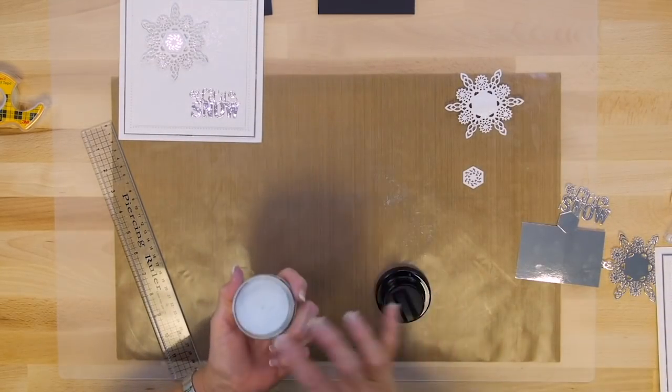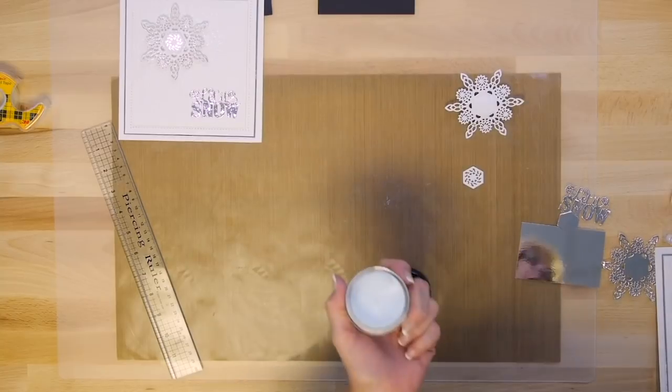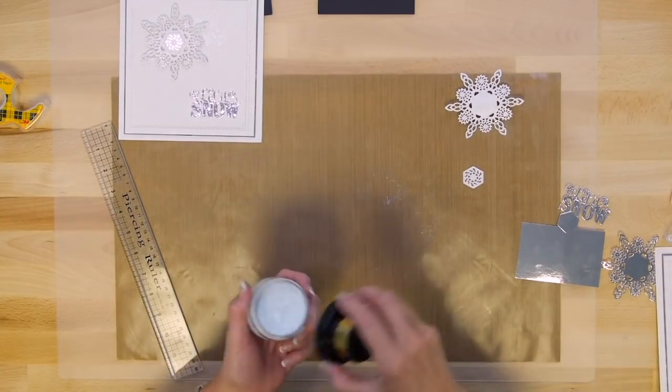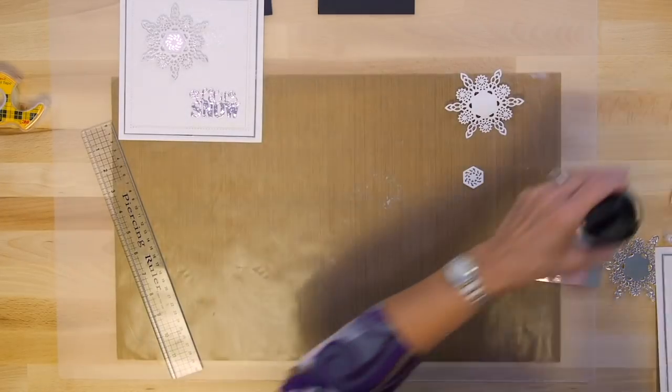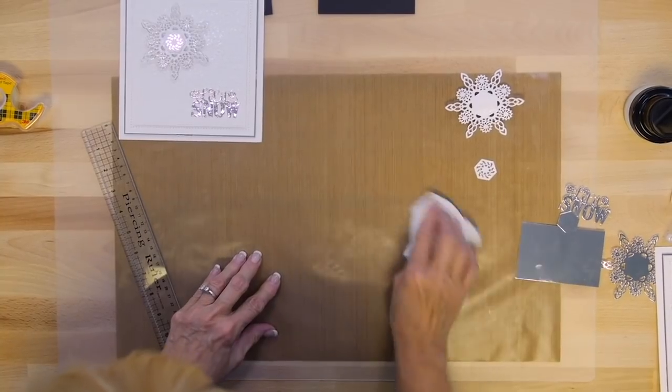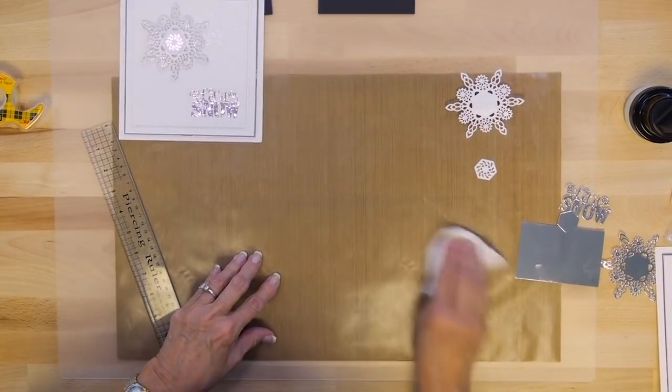And I'll tell you the other thing. When you're using your glitter kiss, a really good habit to get into is just to give it a light spritz before you put the lid on. It's a water-based product and that keeps it from drying out. And I'm just going to tidy up a little bit that I've got on my craft mat here.